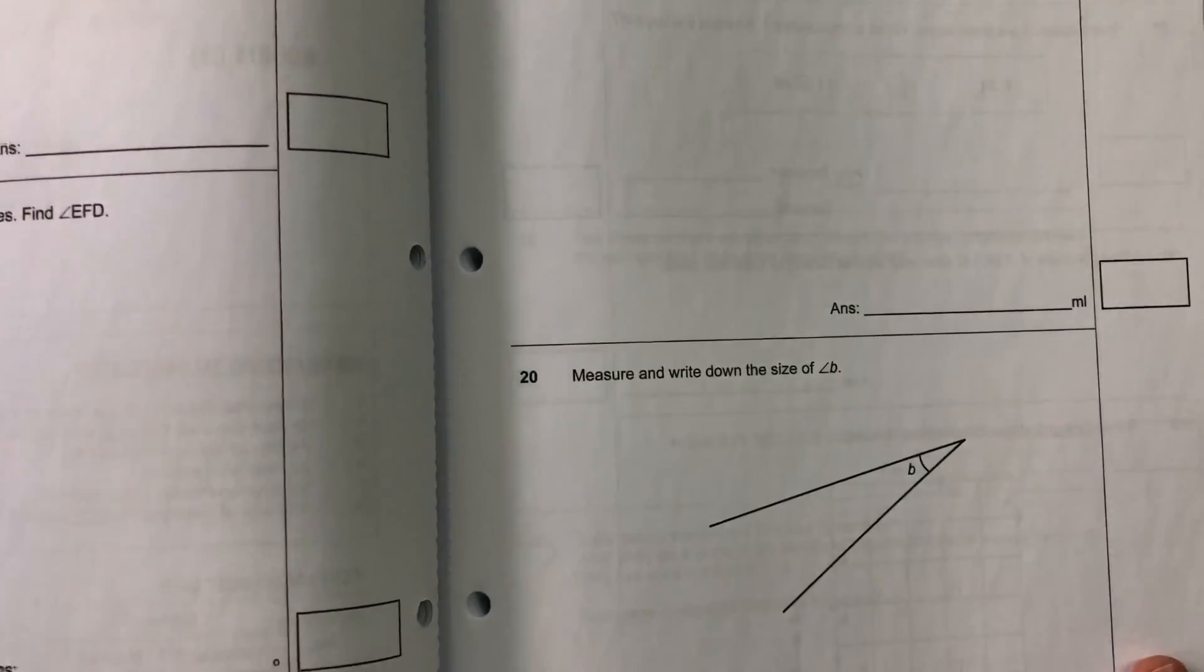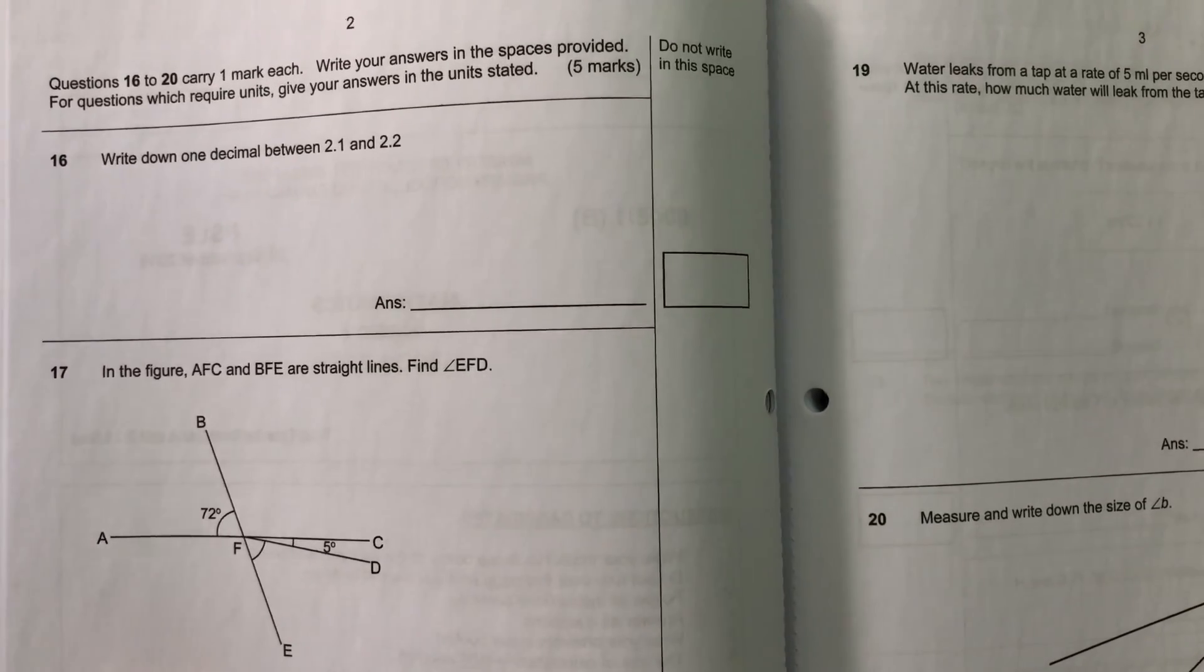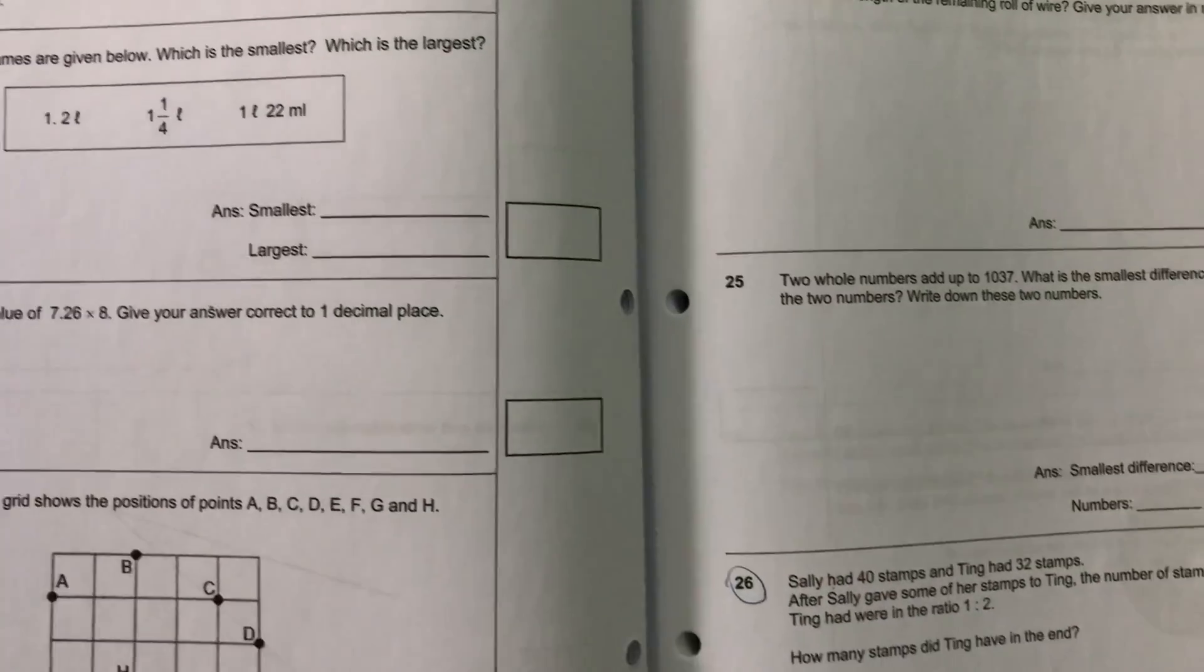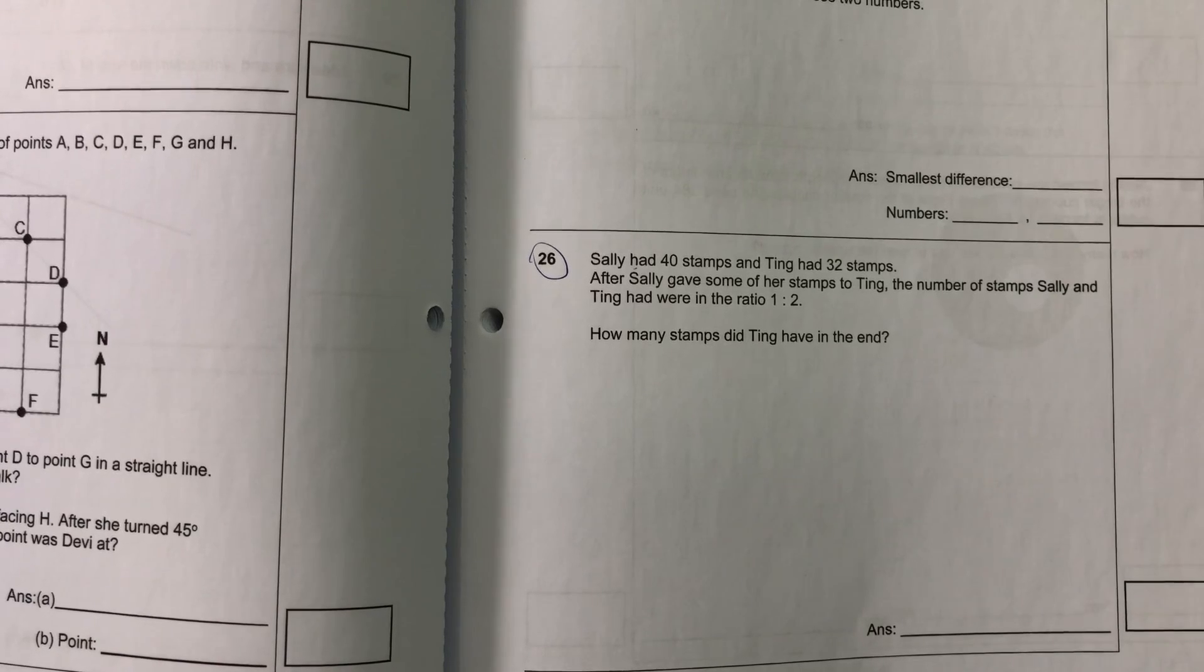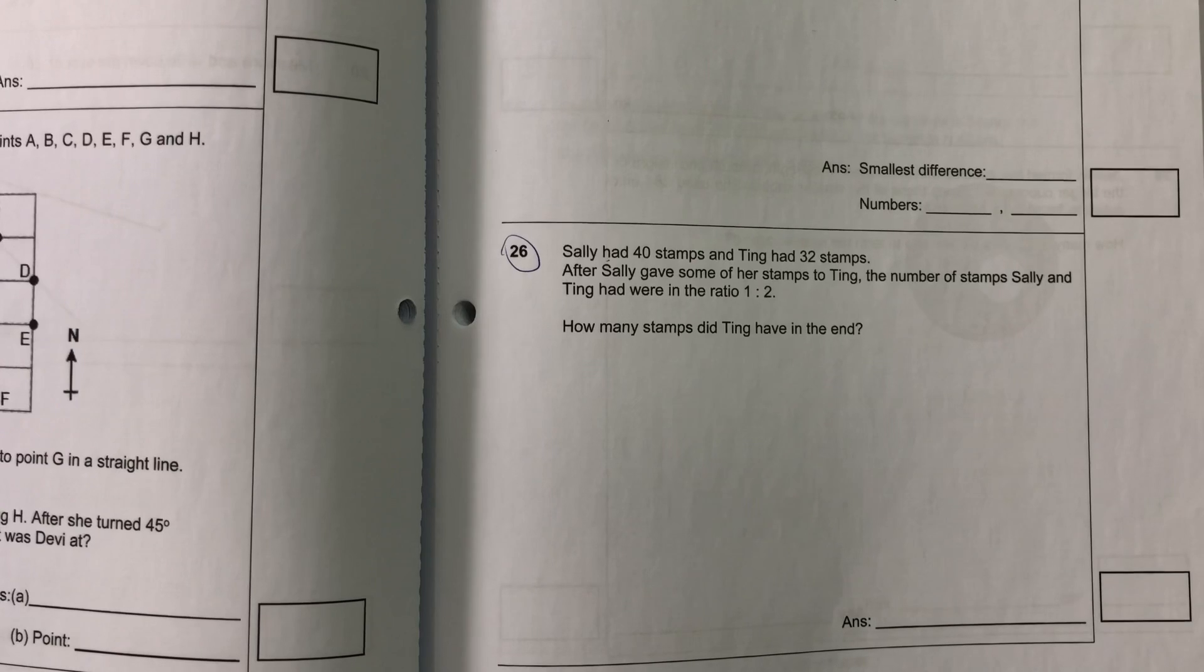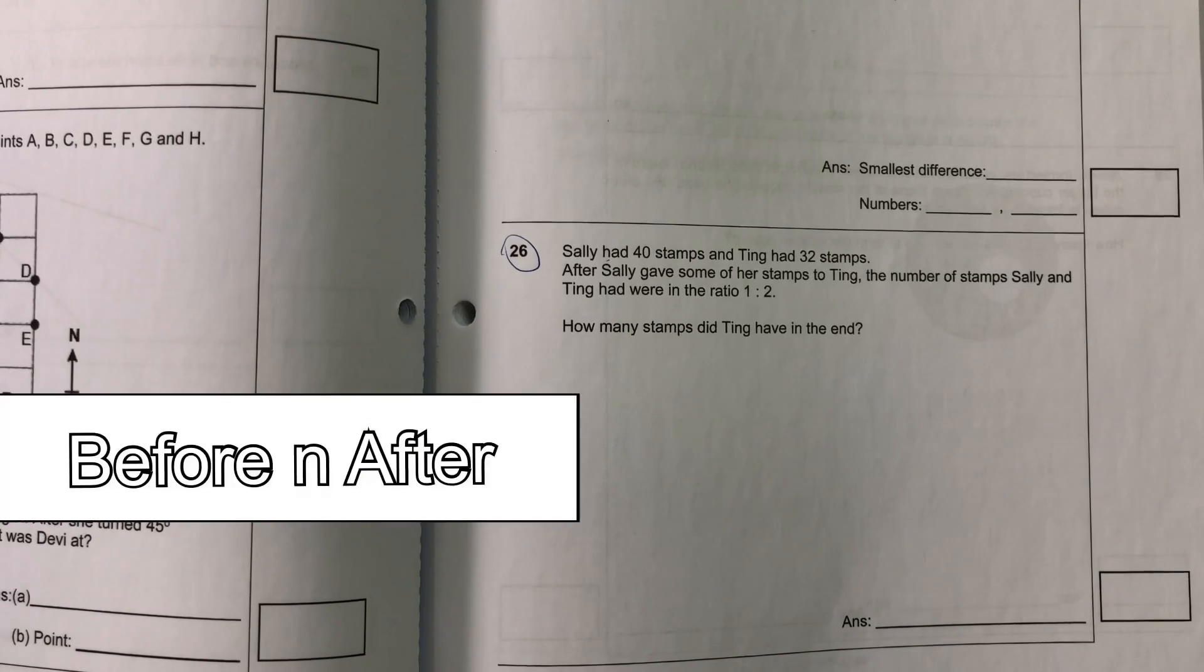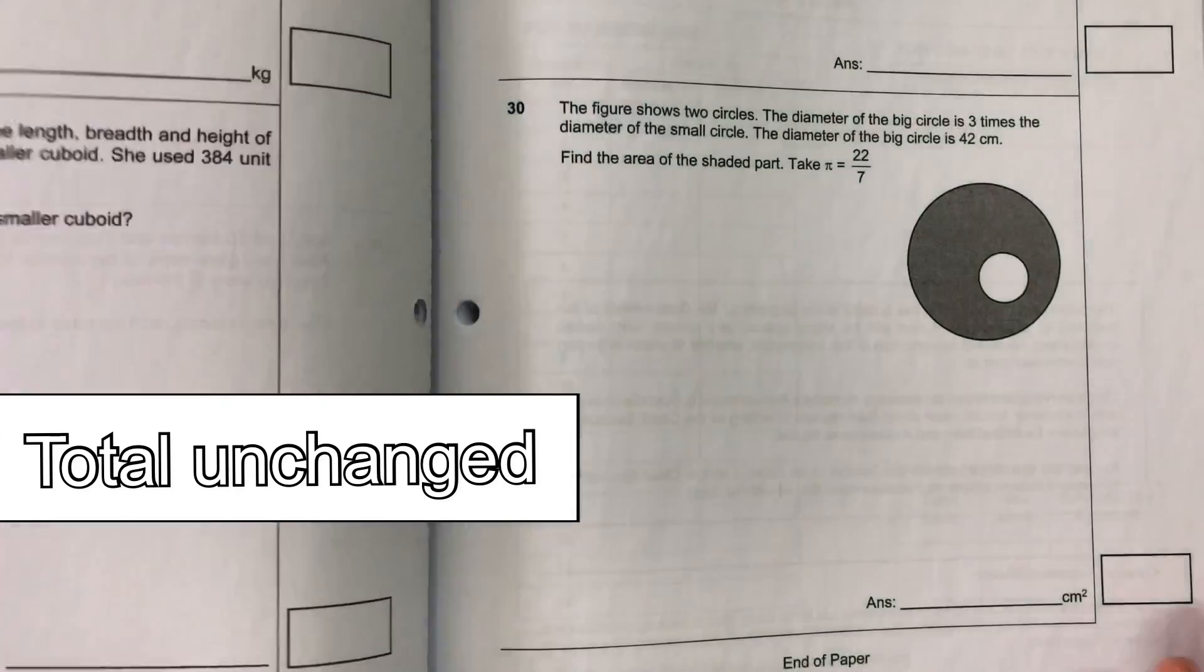Let's continue to see paper 2. Now, the other thing that I want to talk about is the type of heuristics that's been tested. If we look at paper 1, in fact, there's not much heuristics being tested except for this one. So, there's one particular question. As we go along, I will also note down the different types of heuristics that was tested so that we can keep track. So, the first heuristics that I saw is from this question: Sally had 40 stamps, Ting had 32 stamps, etc. What type of heuristics is this? This is actually the before and after. If your child knows before and after, it would be actually pretty simple. In fact, can you identify what type of heuristic this is? After Sally gave something, the total number when the ratio 1 is 2. So, this is actually a before and after total unchanged question.